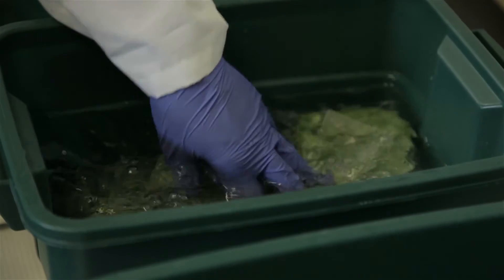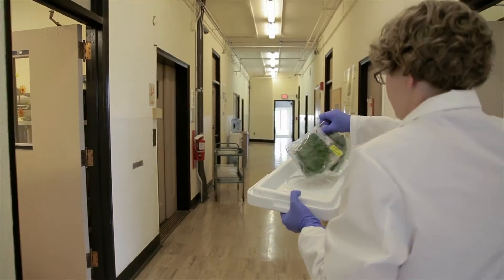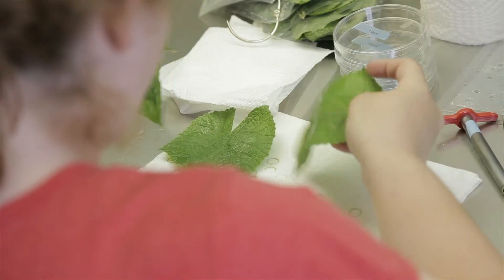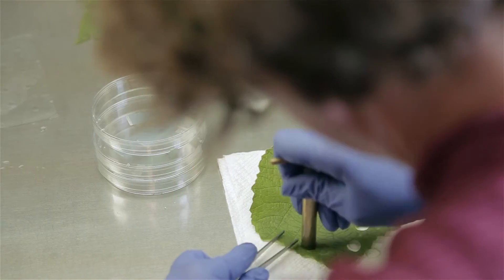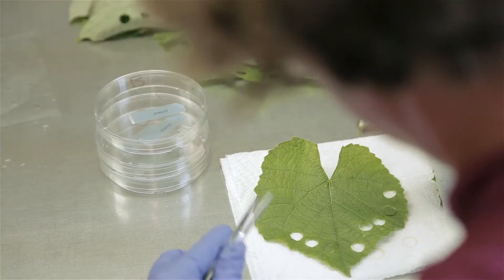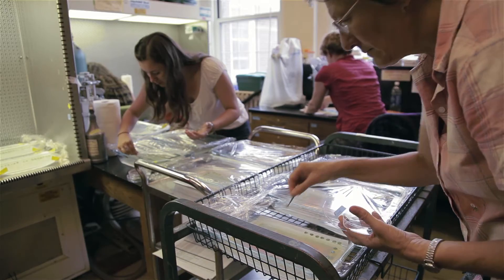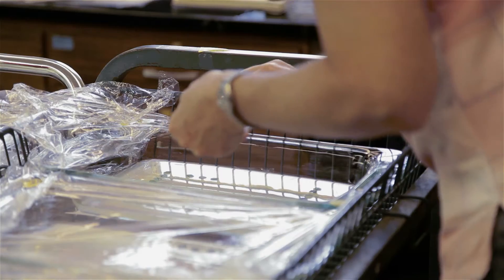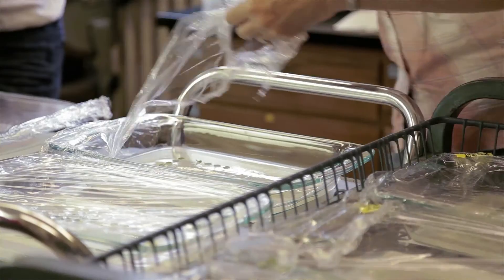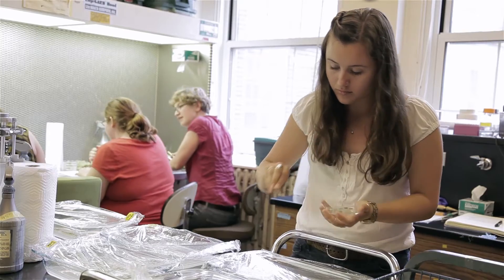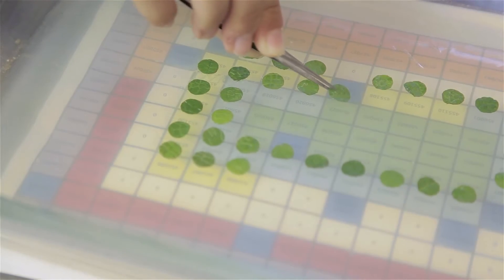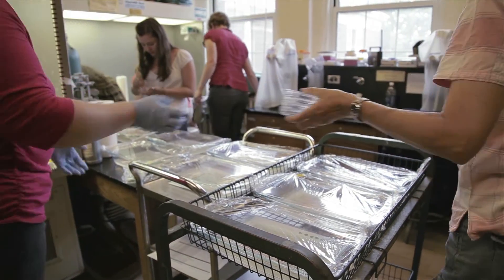After the leaves are collected, they are washed before they can be processed in the lab. Then we can go ahead and punch out leaf discs from each of these leaves using a cork borer. The leaf discs are then placed into a specific position in a Pyrex dish. The reason why we track this position is so that we can track the identity of the sample from the vineyard into the laboratory. After these are placed in the Pyrex dishes, they're ready to be inoculated.